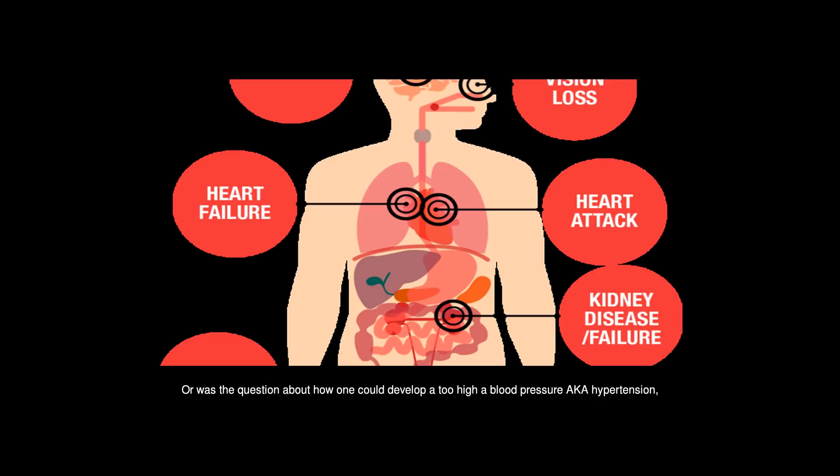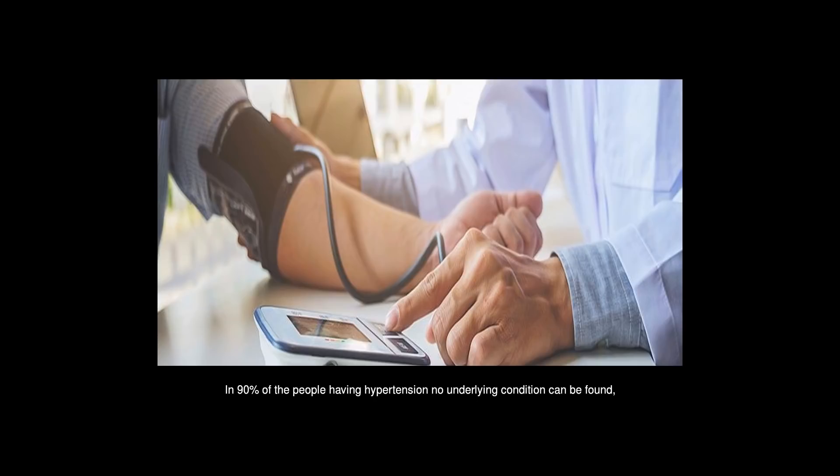Or was the question about how one could develop too high a blood pressure, aka hypertension? In 90% of the people having hypertension no underlying condition can be found.